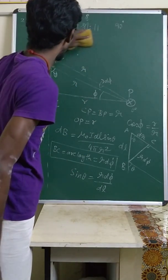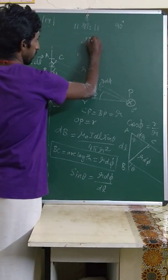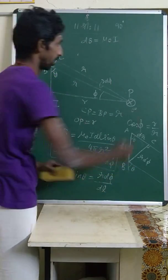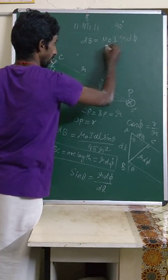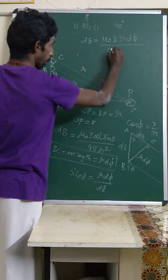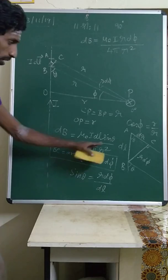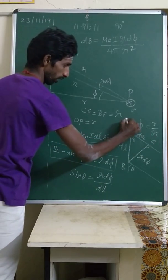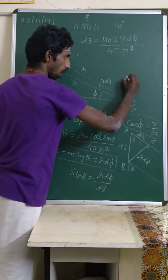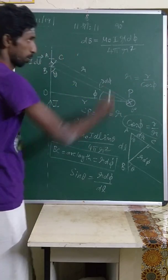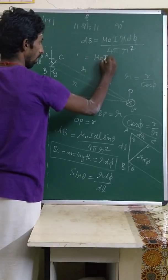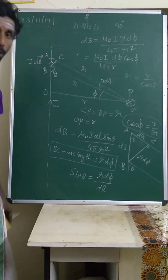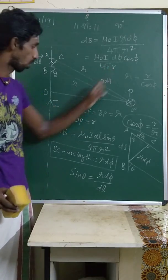Now substitute into dB: dB = μ₀·i·dl·sin θ / (4π·r²). Since dl·sin θ = r·dφ, we get dB = μ₀·i·r·dφ / (4π·r²). The r cancels. Also, from cos φ = r̄/r, we have r = r̄/cos φ. Substituting: dB = μ₀·i·cos φ·dφ / (4π·r̄).